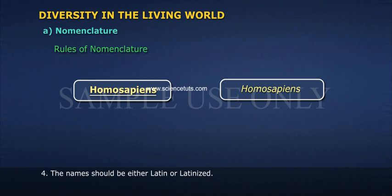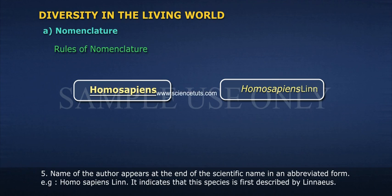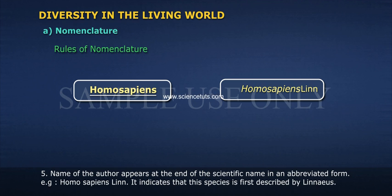4. The name should be either Latin or Latinized. 5. Name of the author appears at the end of the scientific name in an abbreviated form. Example: Homo sapiens Linn. It indicates that this species was first described by Linnaeus.